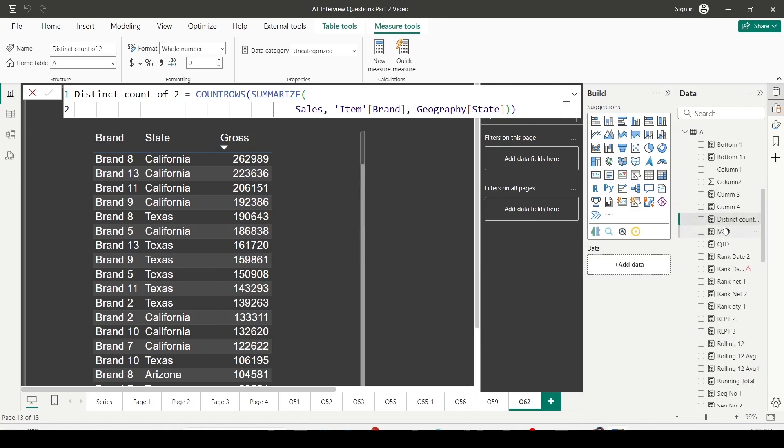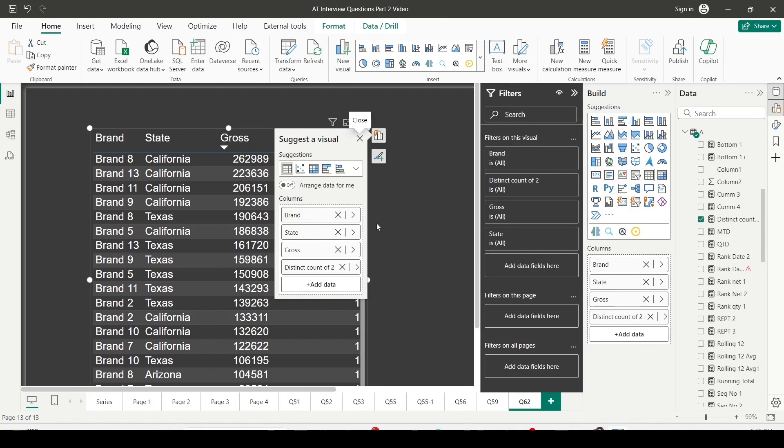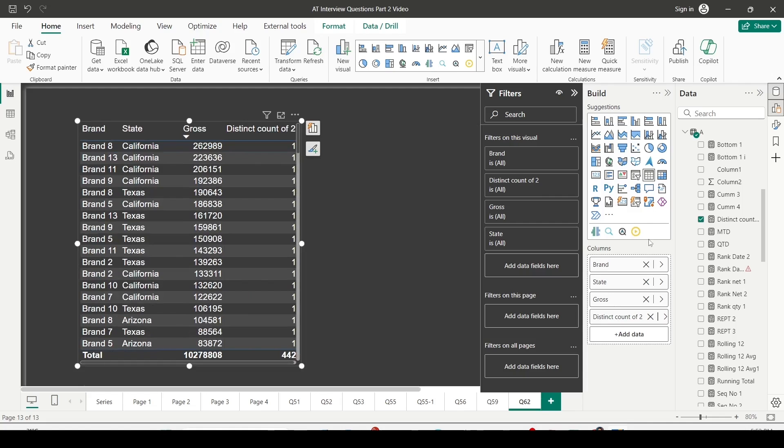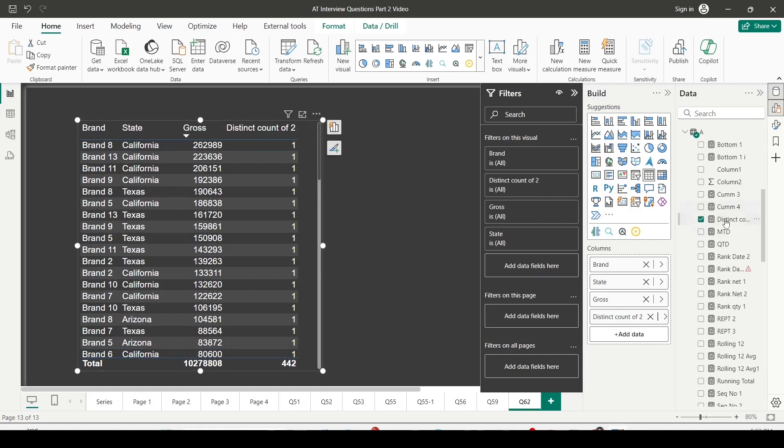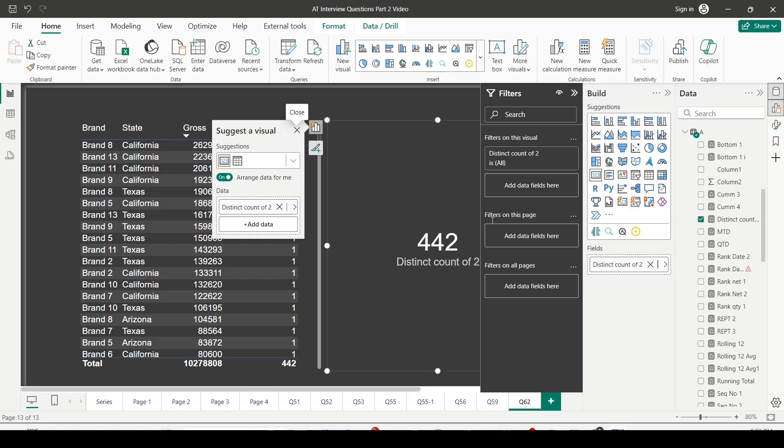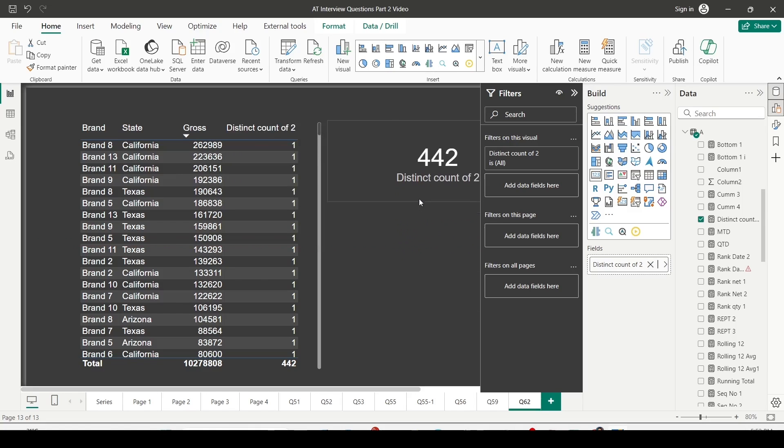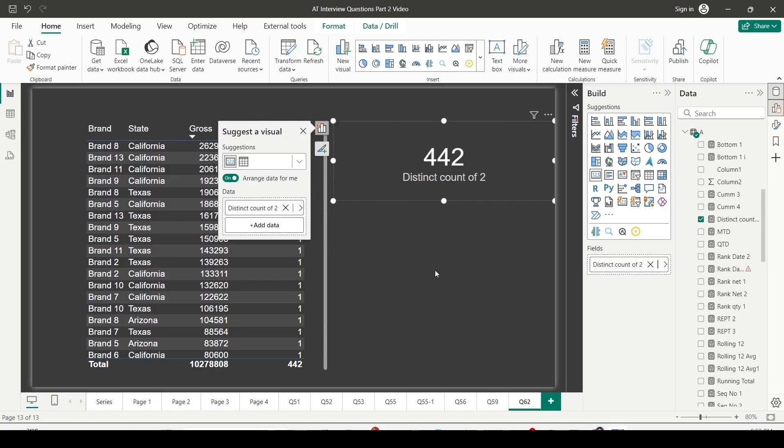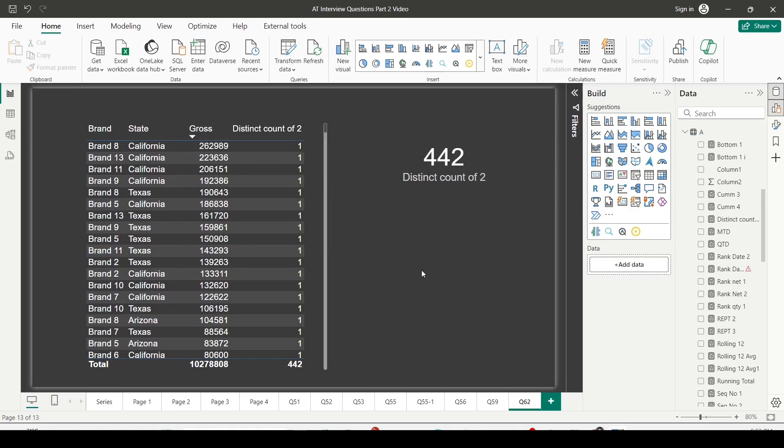It created a new measure. Let me bring that into the visualization. The grand total of the visualization is 442. Even if I put it on a card visual, it should show me the same number. Yes, it is showing me the same number - 442 on a card visual also.